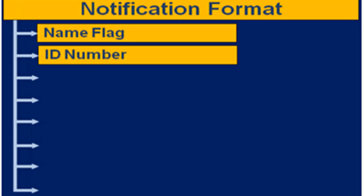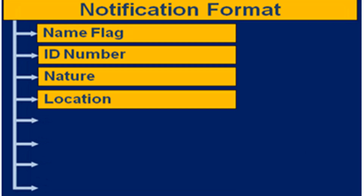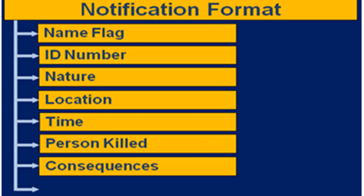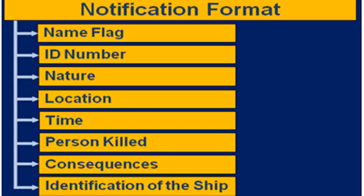The notification must include: the name of the ship, the flag state, the IMO identification number, the nature and location of the marine casualty, the time and date, the number of seriously injured or killed persons, the consequences to individuals, property, and the environment, and the identification of any other ship involved. All very serious marine casualties must be investigated. The primary responsibility lies with the flag state, though as provided in Chapter 7 of the Casualty Investigation Code, an agreement can be made whereby substantially interested states conduct the inquiry.